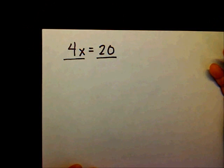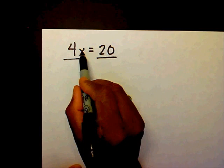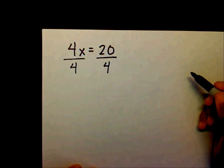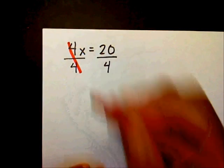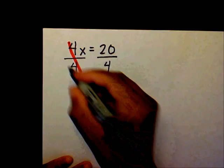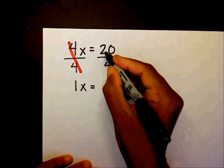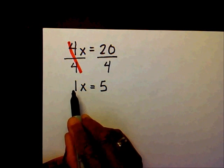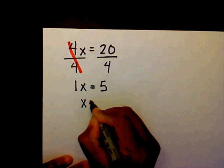Since it's being multiplied by 4, I'm going to do the opposite of multiplication, which is division, and I'm going to divide both sides by 4. We know that 4 divided by 4 is 1, so they cancel each other out. I'm left with x equals 20 divided by 4, which is 5. We don't have to write 1x equals 5, we can just write x equals 5.